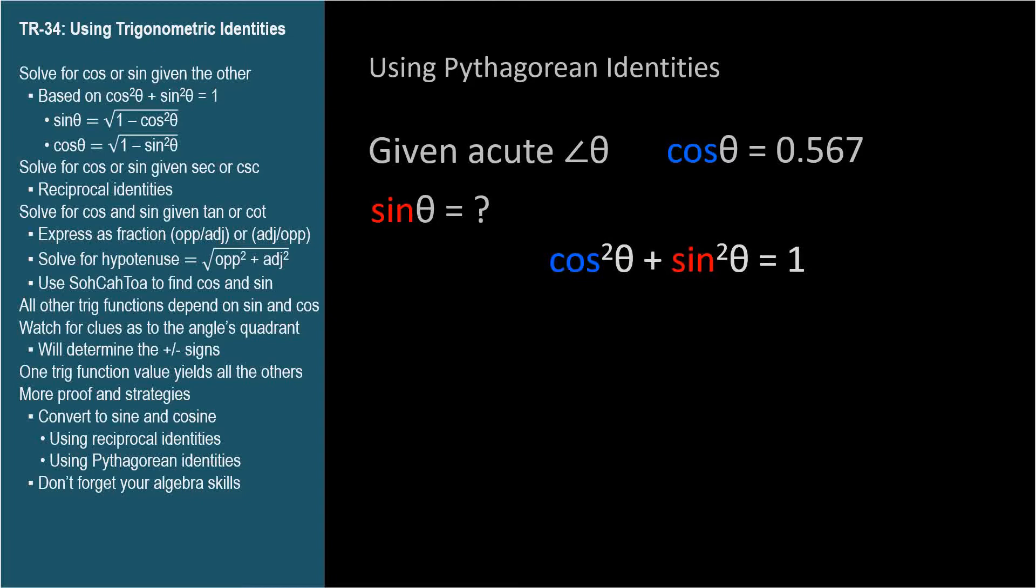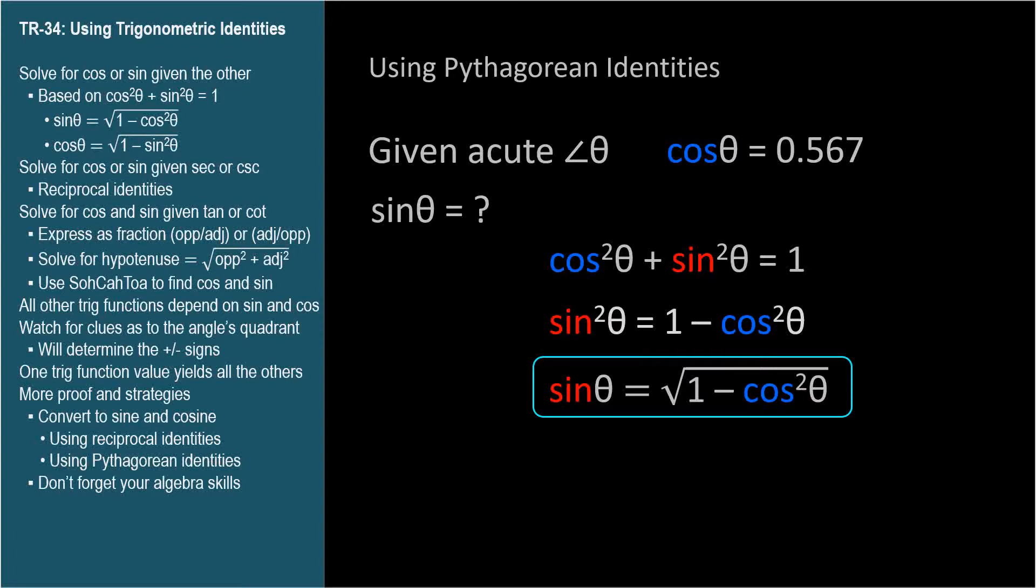If cosine squared theta plus sine squared theta equals 1, then we can isolate sine squared theta equals 1 minus cosine squared theta. When we take the square root of both sides, we get a form of the main trig equation that solved for the sine in terms of cosine. Very handy.